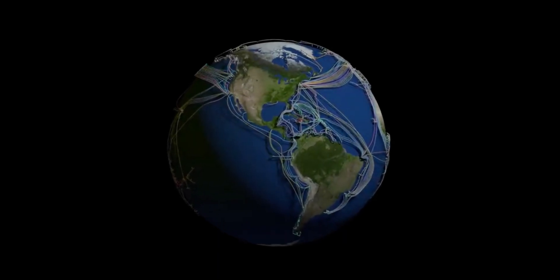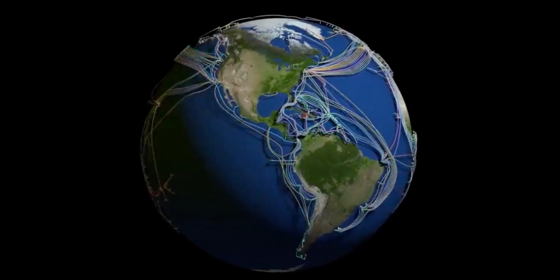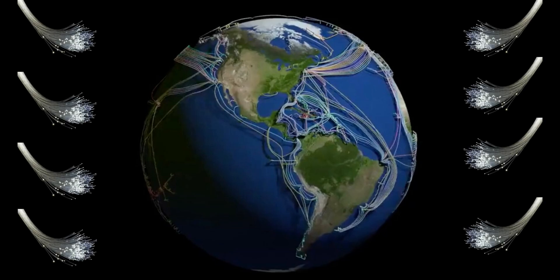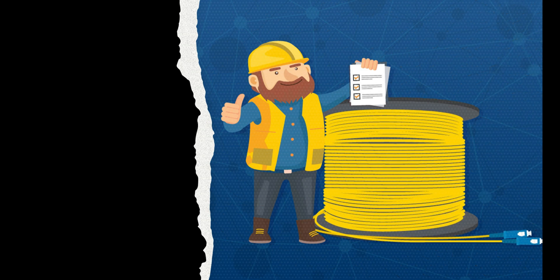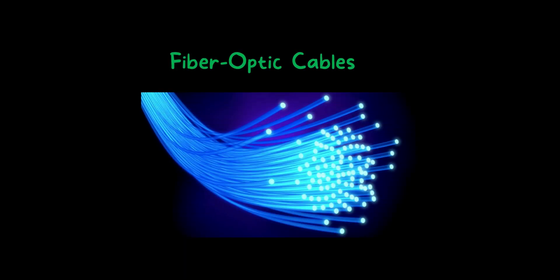Have you ever wondered how the internet is connected between multiple countries? It is with the help of fiber optic cables. The internet is the interconnection of multiple networks that spread across the world, and fiber optic cables are widely used in the creation of the internet. In this video we are going to discuss fiber optic cables.